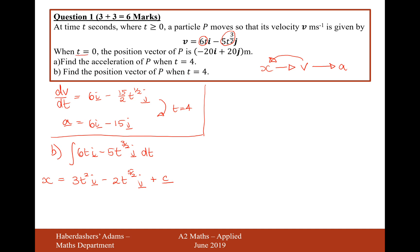So what it says here is that when t equals 0, p is a position vector minus 20i plus 20j. So let's substitute that in then. t equals 0 and x equals minus 20i plus 20j. So that's going to be minus 20i plus 20j equals c. Because when t is 0, the expression there will become 0. When t is 0, this expression here will become 0. So c is minus 20i plus 20j.